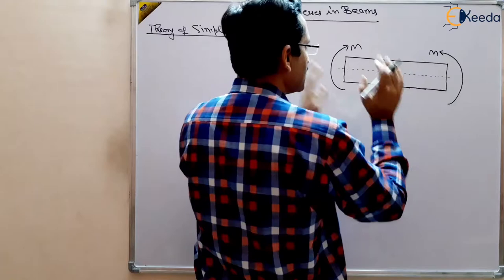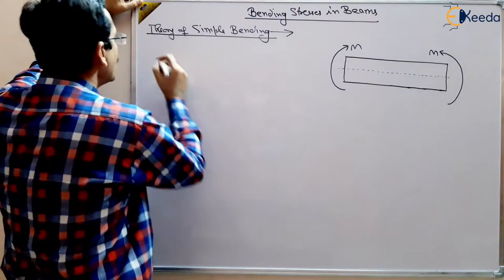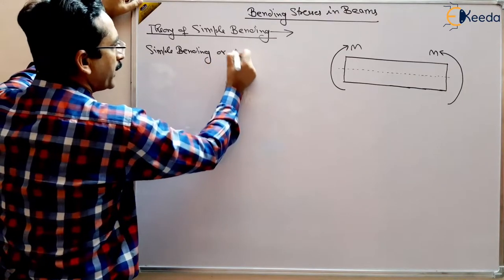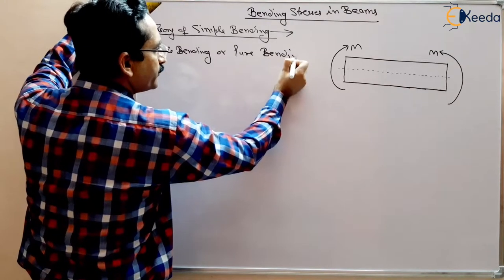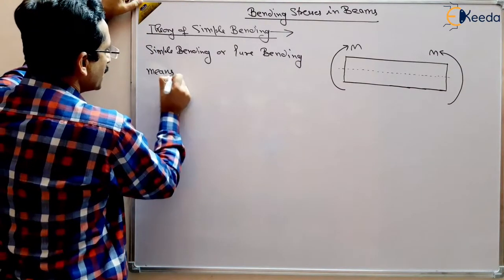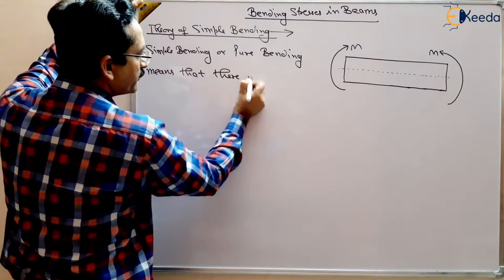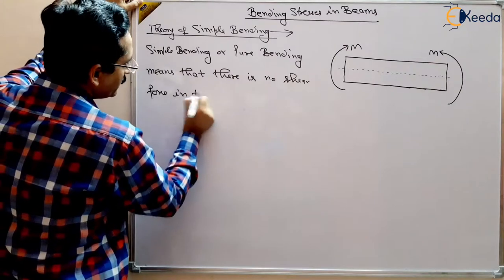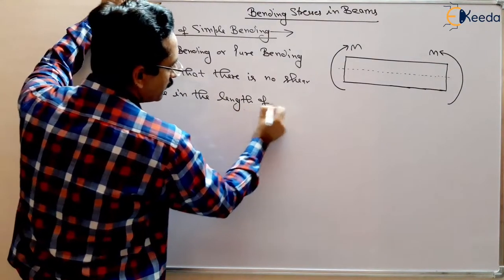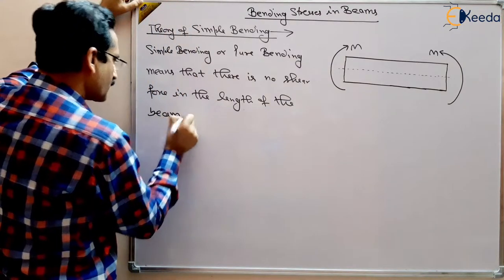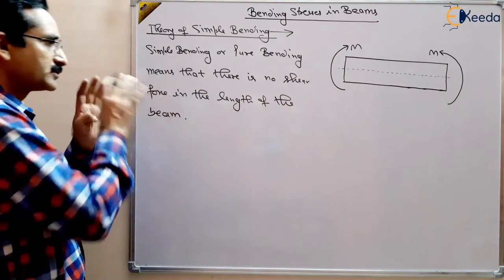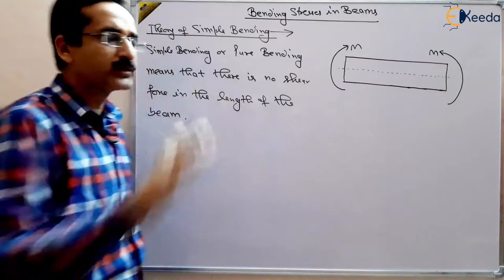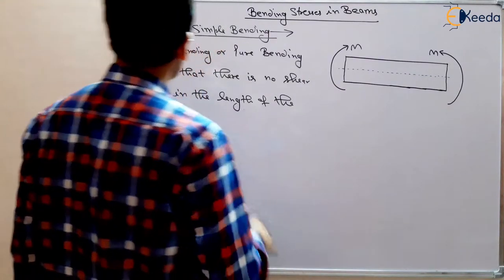Pure bending means there is no shear stress in the material of the beam. Simple bending or pure bending means that there is no shear force in the length of the beam — no shear stress or shear force in the entire length of the beam. There is only bending stress. This is called theory of simple bending.